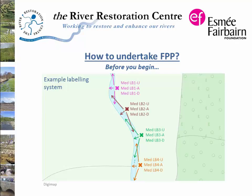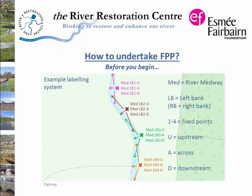The label for each photo should include information on the project, the bank side, the fixed point, and the direction, so on subsequent visits the same set of photographs can be taken from each point. In this example, MED is used to signify the River Medway restoration project, LB for left bank, the numbers 1 to 4 are the fixed points, and U, A and D indicate upstream, across and downstream.